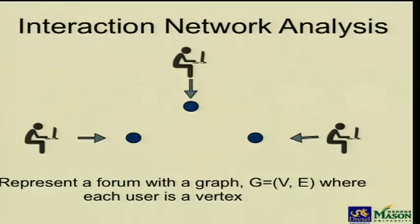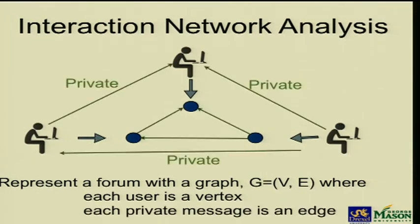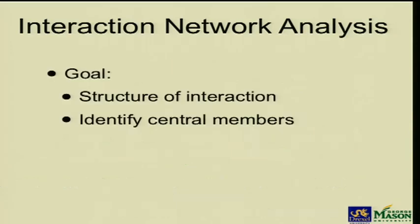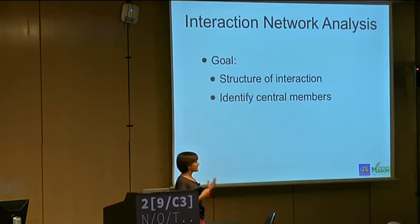For interaction network analysis, we created a graph for each forum where each user was represented as a vertex, and each private interaction between users was represented as a directed edge. Our goal was to see the structure of interaction among members — who is connected with whom, who is talking with whom — and to identify central members in the forum.